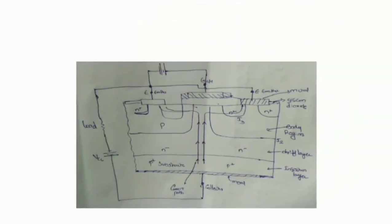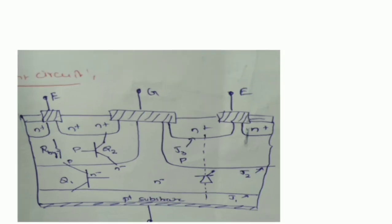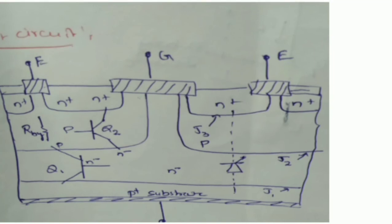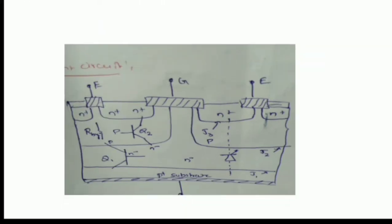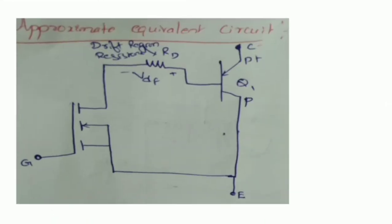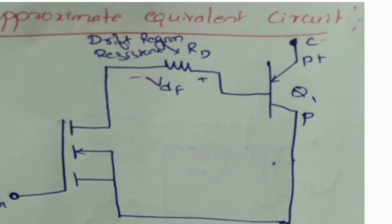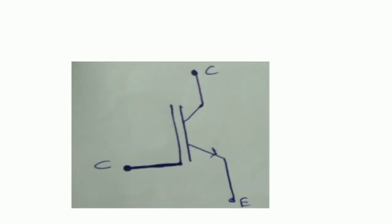The equivalent circuit of the IGBT shows that it can be thought of as a combination of a MOSFET and a power BJT. This combination is the approximate equivalent circuit of the IGBT. The symbol of the IGBT is slightly changed from the MOSFET symbol, as it incorporates the BJT component. The IGBT has terminals: gate, emitter, and collector.